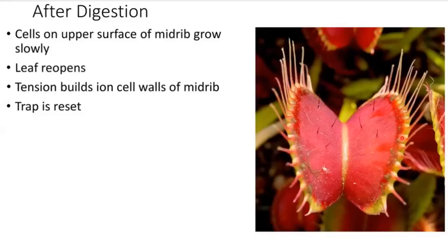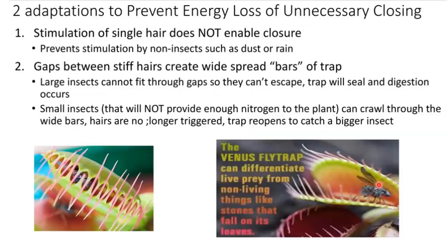After digestion, the cells on the upper surface of the midrib grow, the leaf reopens, and the tension in the cell walls of the midrib builds again. With the tension restored, the trap is reset and ready for its next capture.